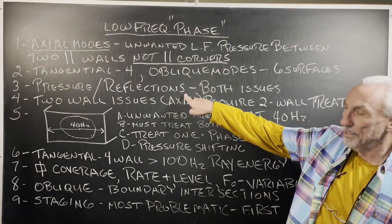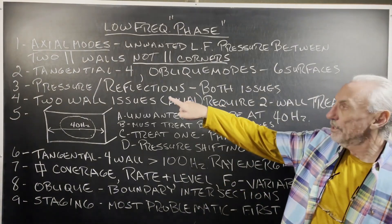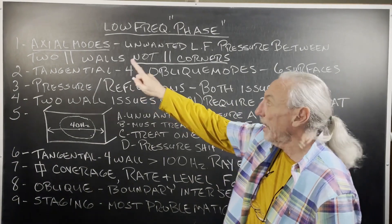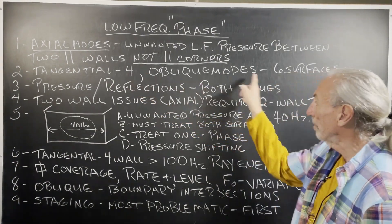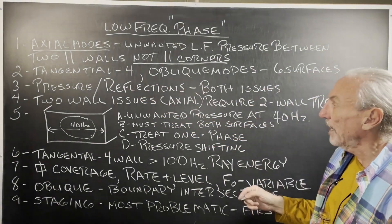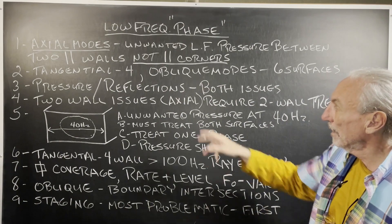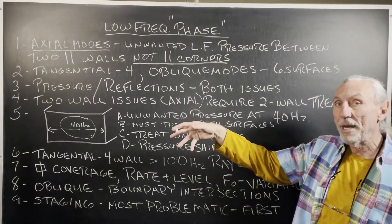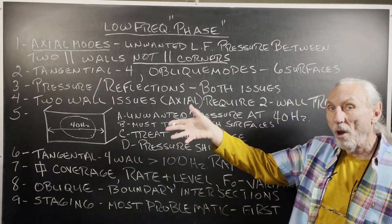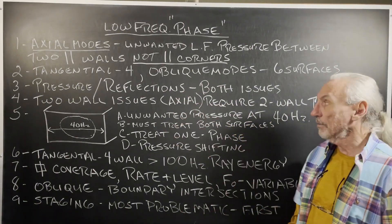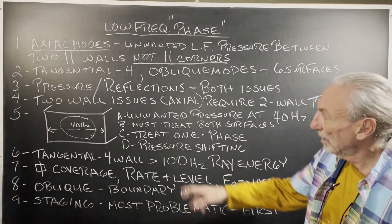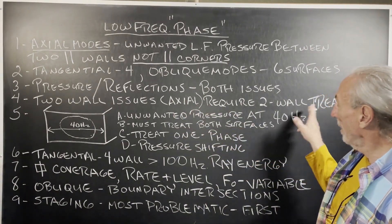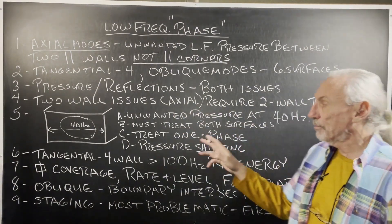Pressure and reflections — these are the two main issues, always in acoustics. Tangential or four-wall, axial or two-wall, oblique or six — we'll talk more about that later. But pressure and reflections are the two main issues.